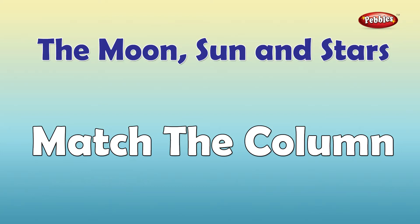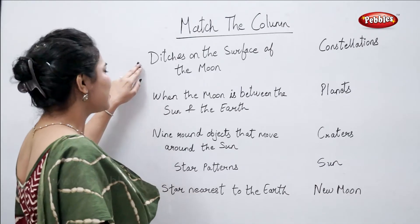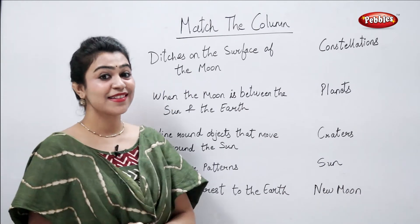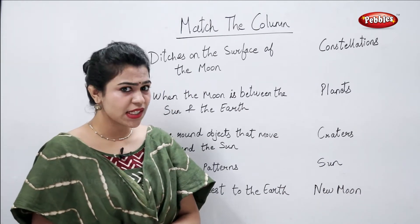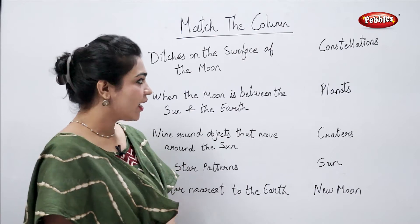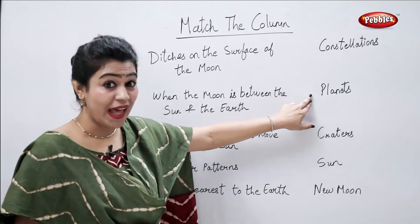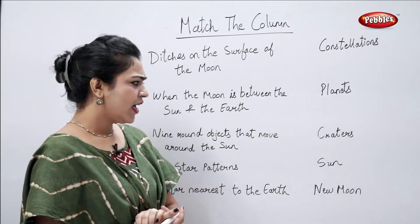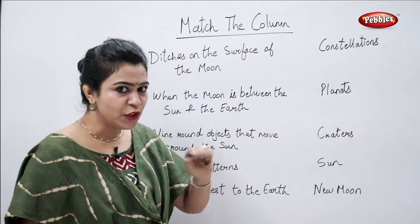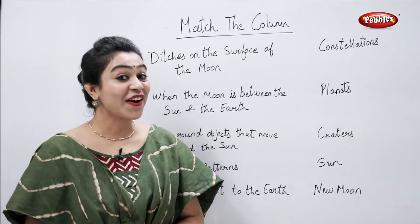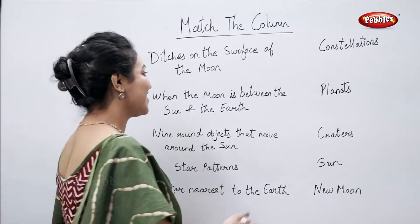Match the column. Ditches on the surface of the moon — command students, tell me what are they called? Are they called planets? No. Are they called new moon? No. They are called craters.